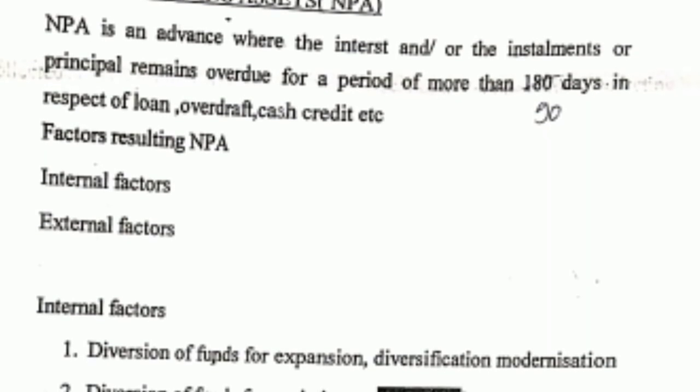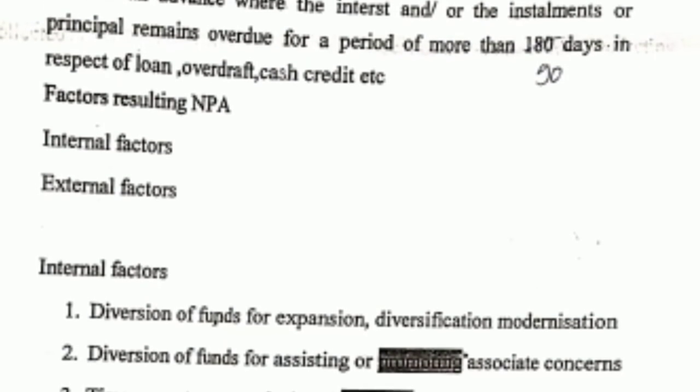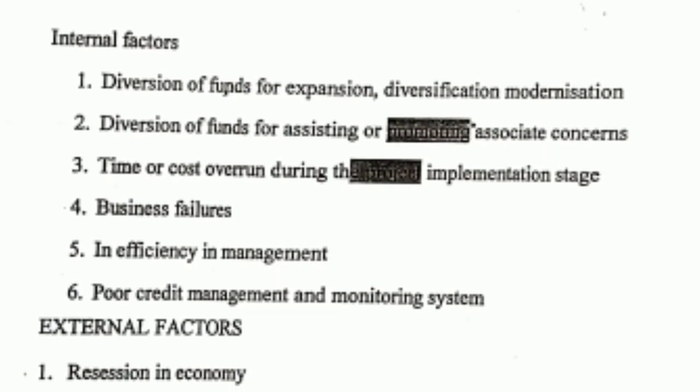There are factors resulting in non-performing assets: internal factors and external factors. The first internal factor is diversification of funds. For example, if I am investing only in shares and the shares go into loss, my whole amount is lost. But if I invest in government bonds, life insurance, shares, property, etc., I will not be in total loss. That is known as diversification — the banking institution should spread amounts across different sections of society.